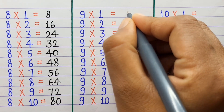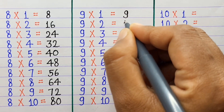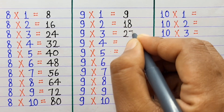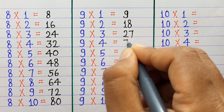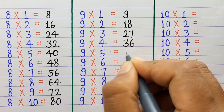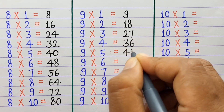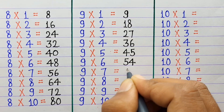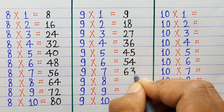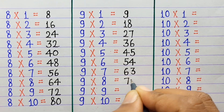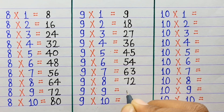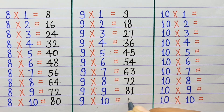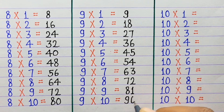9×1=9, 9×2=18, 9×3=27, 9×4=36, 9×5=45, 9×6=54, 9×7=63, 9×8=72, 9×9=81, 9×10=90.